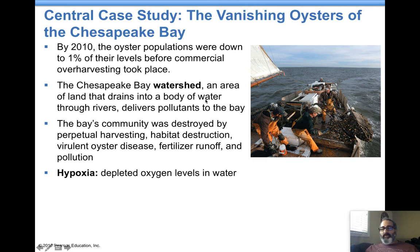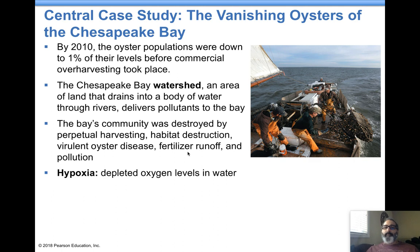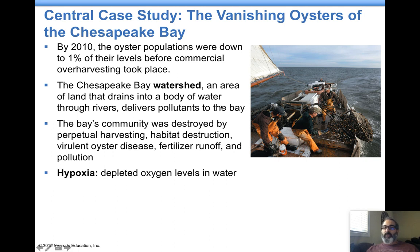What is a watershed? All the land in an area drains into rivers or streams, and those rivers and streams eventually make their way downstream into the bay. The watershed — this will come up again in our chapter on water — is the land that filters or drains into the local nearby stream, which eventually makes its way to a river and then out to the ocean.